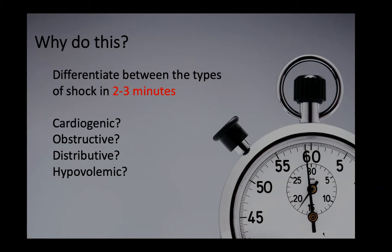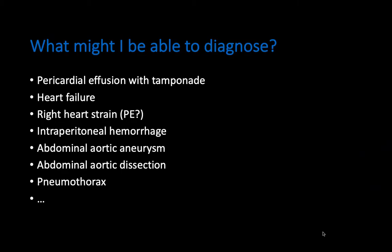In studies looking at the ability of this exam to identify a type of shock in an otherwise undifferentiated patient, the RUSH exam has been estimated to have a sensitivity of up to 87% in identifying a source of shock. Identifying the type of shock can help guide your choice in different medications, other therapies, and in obtaining further imaging. Here are some things on the differential for undifferentiated hypotension or shock that you may be able to diagnose immediately with a bedside RUSH exam.